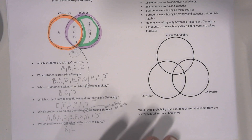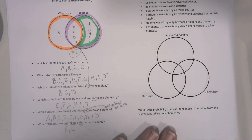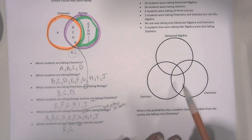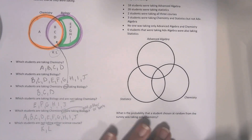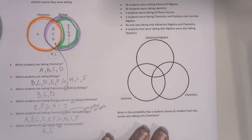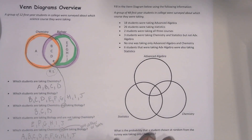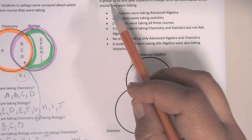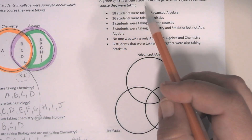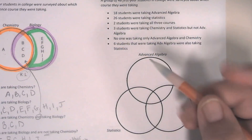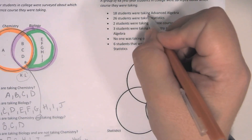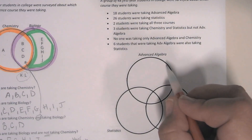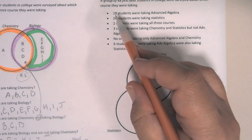So that's how you read a Venn diagram with two circles. We can also have Venn diagrams with multiple circles — more than two. Sometimes three will look like this; you could have more than three, overlapping in different ways. But this is a traditional three-circle Venn diagram. We're going to fill in the Venn diagram using this information: a group of 48 first-year students in college were surveyed about which course they were taking. First, 18 students were taking advanced algebra — this circle here represents advanced algebra.